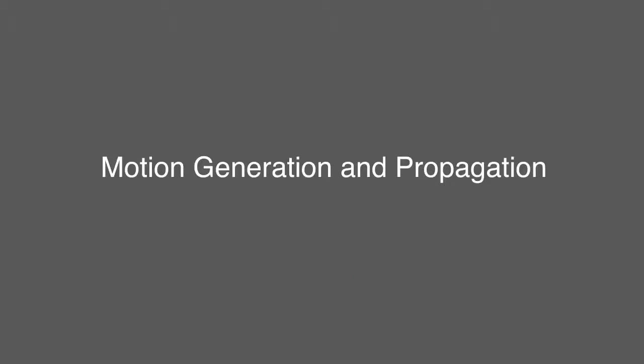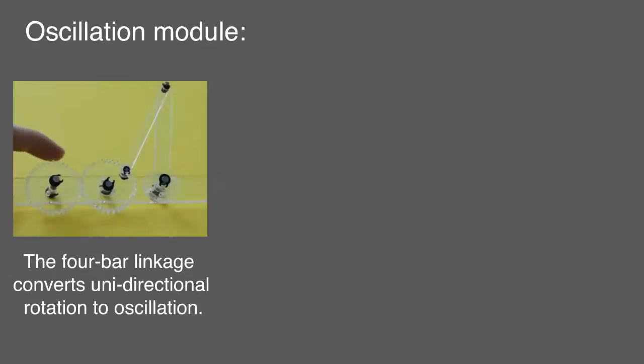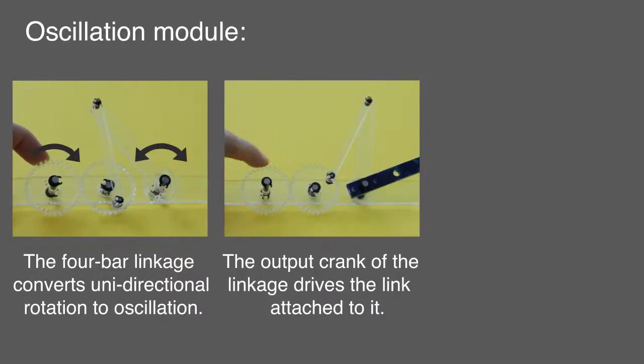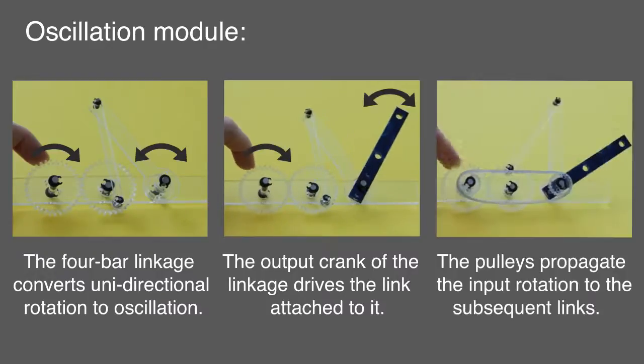To meet each bone of the mechanical figure we introduce an oscillation model that uses gears, a pulley and a 4 bar linkage. The 4 bar linkage converts unidirectional rotation to oscillation. The output crank of the linkage drives the link attached to it. The pulleys propagate the input rotation to the subsequent links.